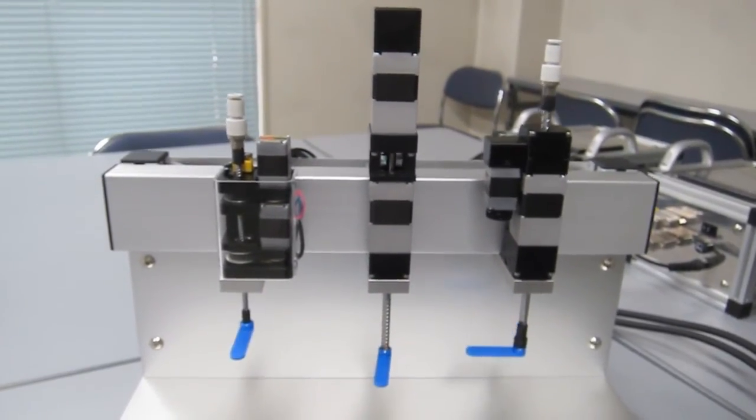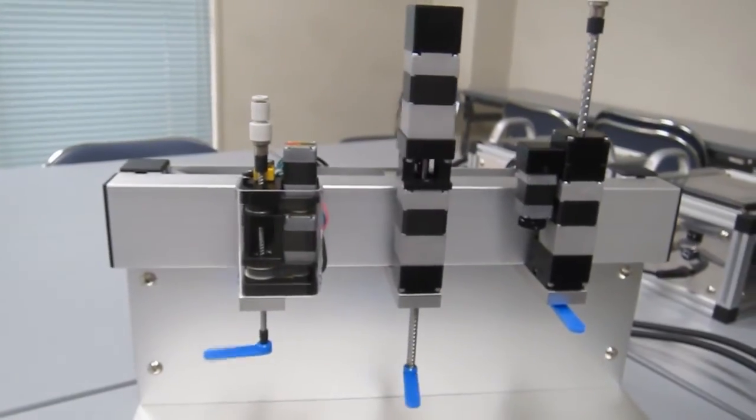The ball screw shaft is hollow, allowing for a convenient way to attach a vacuum line or an air-type gripper.